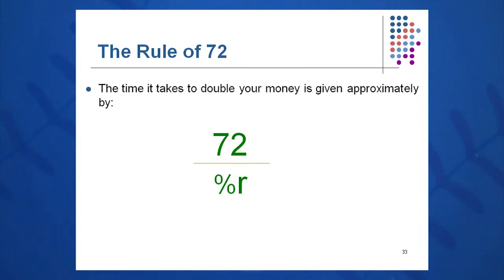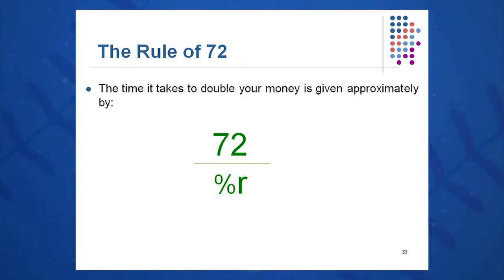The rule of 72 basically says: to calculate the time t, take 72 divided by the rate and you get the approximate time it will take to double your money. The key word is double. If someone says we want to increase our sales from 250 million to 500 million — that's a double — and if we're going to do that in five years, well the rate would have to be about 15%. You can do these calculations very quickly.